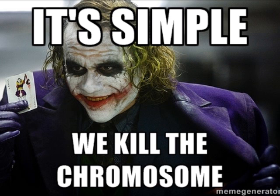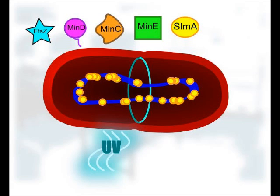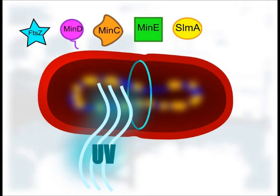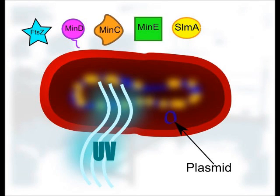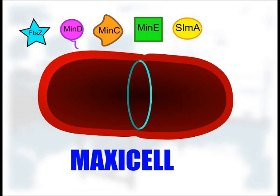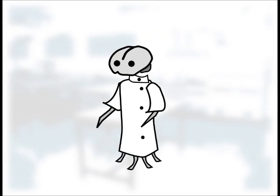It's simple. We kill the chromosome. UV light in high enough intensity can annihilate DNA by introducing breaks in the strand. The longer the strand of DNA, the more vulnerable it is to being destroyed by UV radiation. Small plasmids can survive better than the large bacterial chromosome. But once you get rid of the chromosome, all those proteins protecting it, such as SlmA, disappear as well.